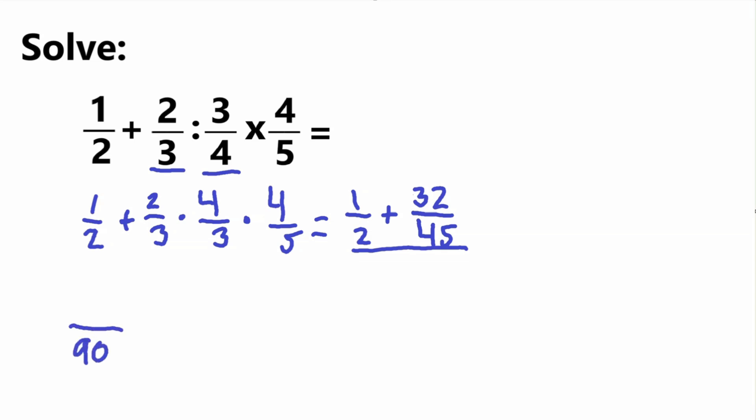And now, when you go from 2 to 90, you multiply by 45, so whatever you do to the top, you have to do to the bottom. So here we multiply the bottom, the denominator by 45, so we have to do that to the top. So 45 times 1 is equal to 45.